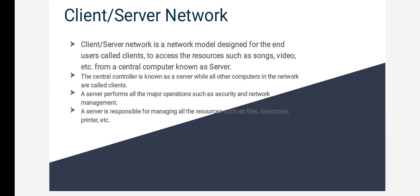The next one is Client-Server Network. This is the second basic type of network architecture. In this network architecture, there is a central controller called a server and the remaining devices are called clients. All the information is sent to the server and all the clients can access this information from the server. By using a Client-Server Network, we can share resources like printer, scanner, and videos from a central computer known as the server.